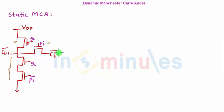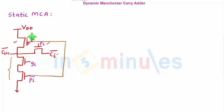Now we'll use the same circuit to draw our dynamic Manchester carry adder. The only changes we make are: this PMOS transistor becomes the header transistor and the bottom NMOS transistor becomes the footer transistor. This means the GI signal and PI signal inputs are replaced — together they become PHI — and this is no longer a static circuit but a dynamic circuit.